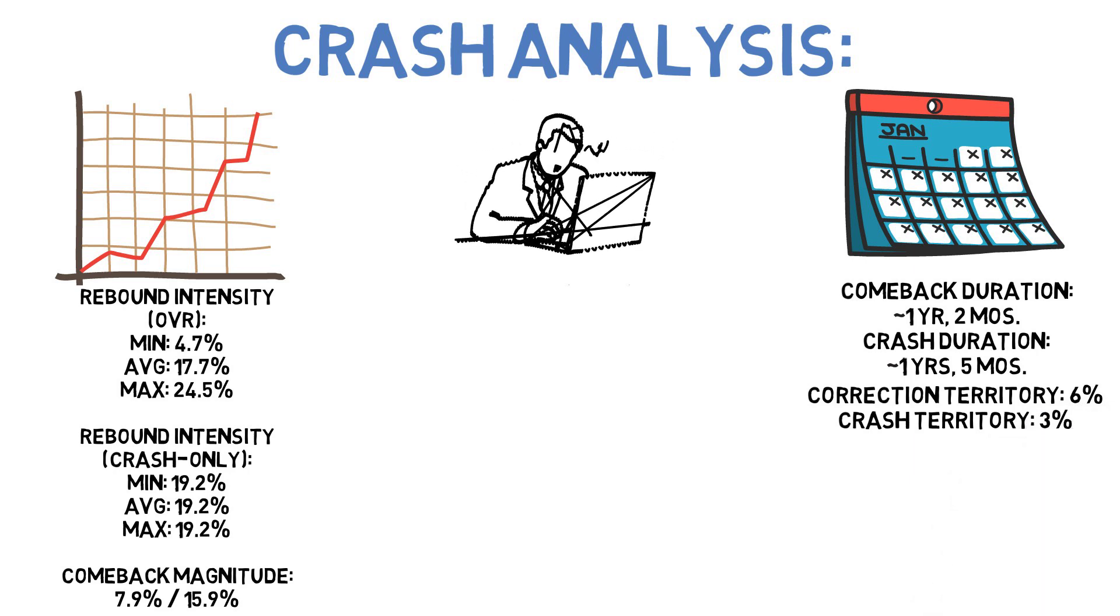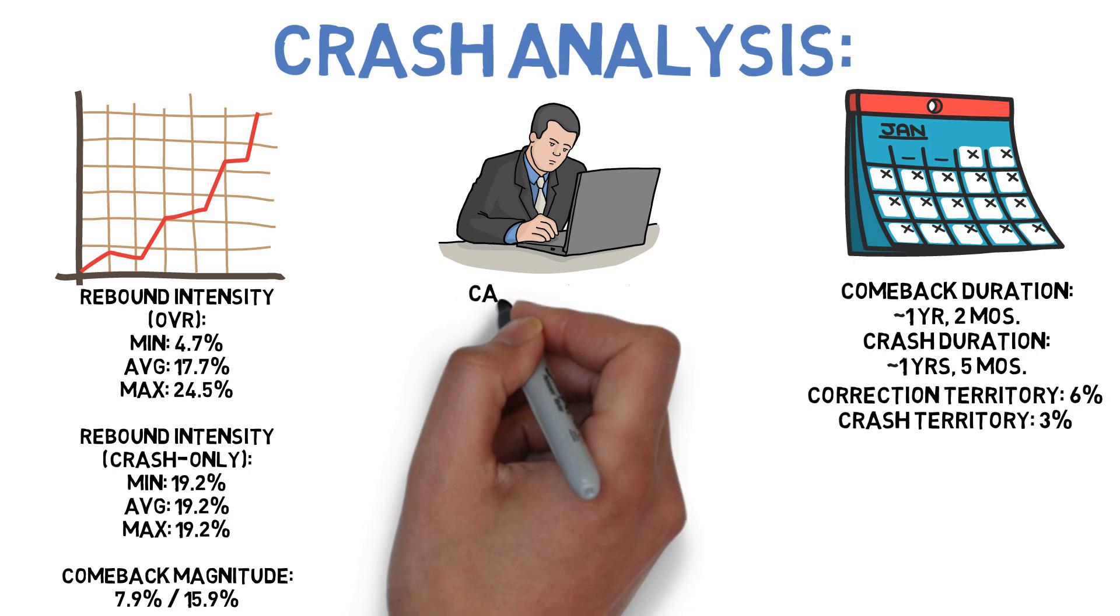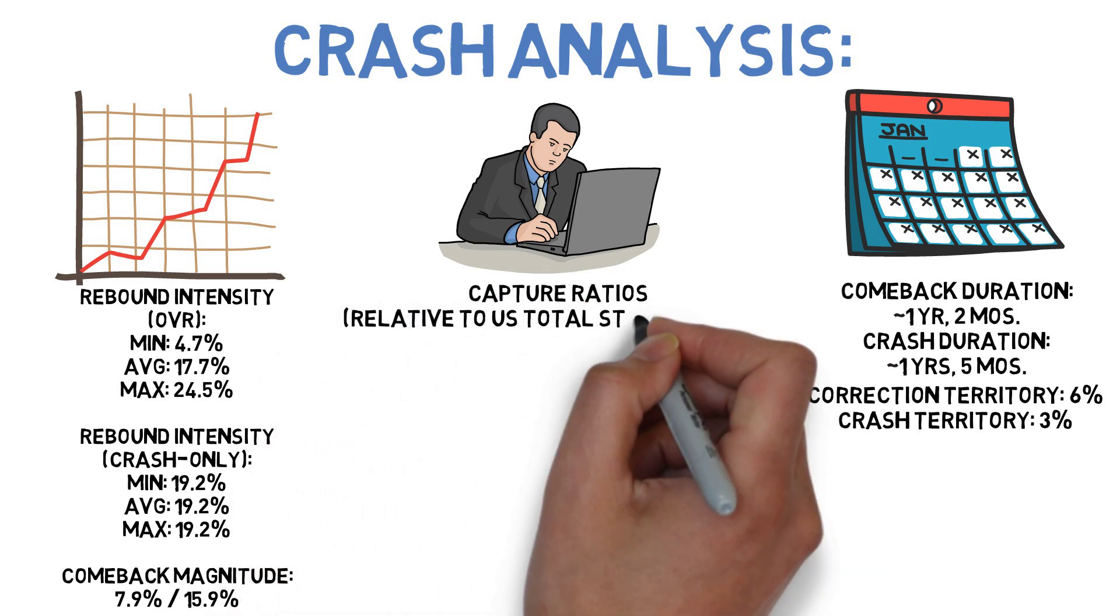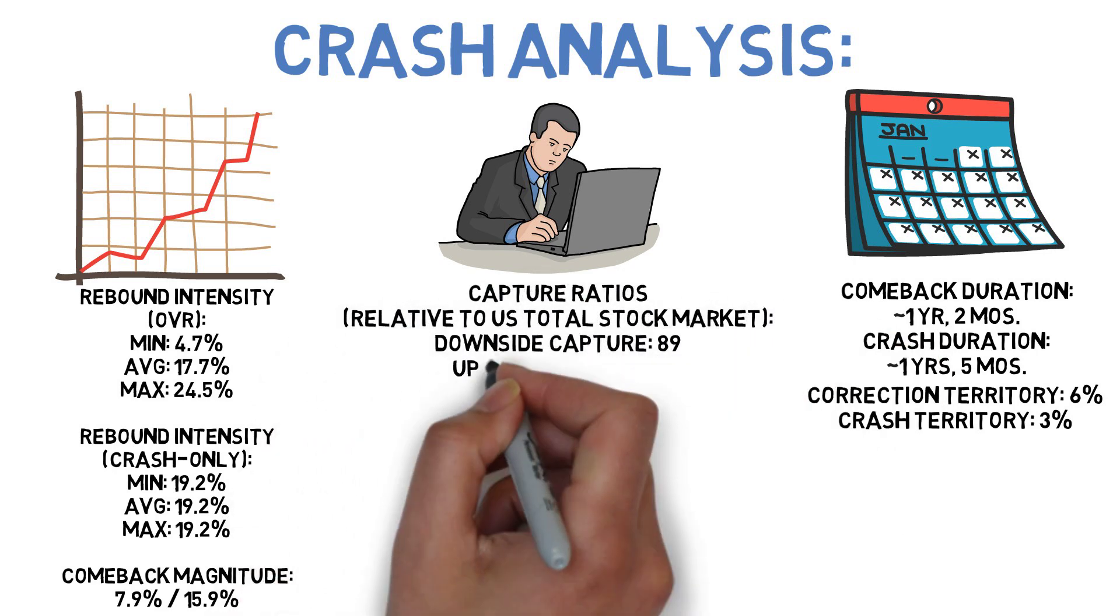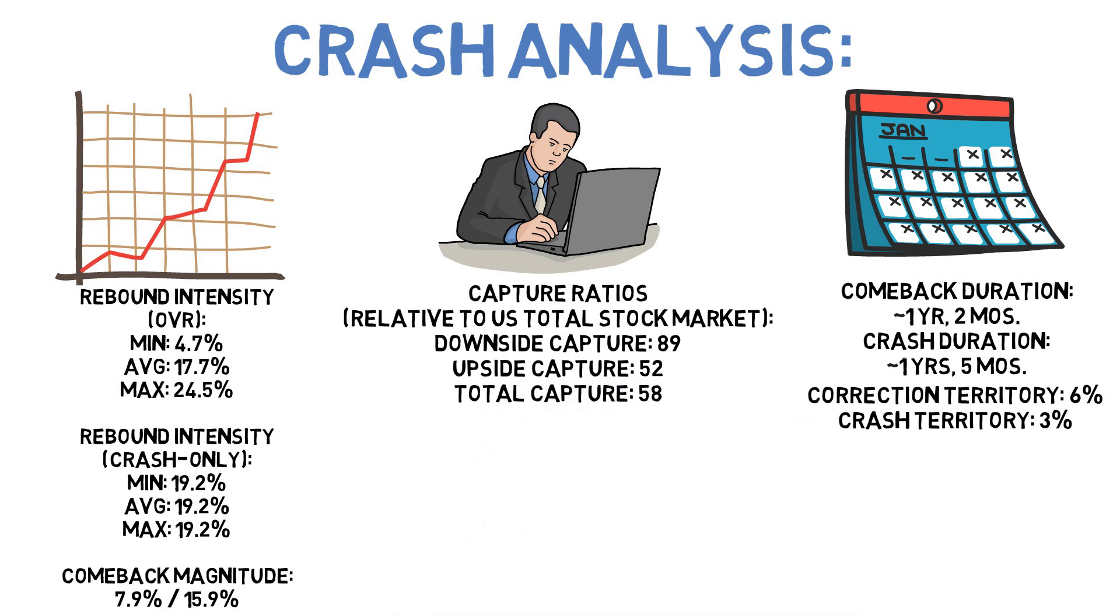Its downside capture ratio, which measures how far the portfolio falls relative to a benchmark in the months that the portfolio itself is down, was 89 when measured against a total stock market index fund, suggesting that when it falls, it does so less than the market as a whole. When the portfolio was rising, it was also doing that at a slower rate than the overall market, scoring an upside capture ratio of 52.